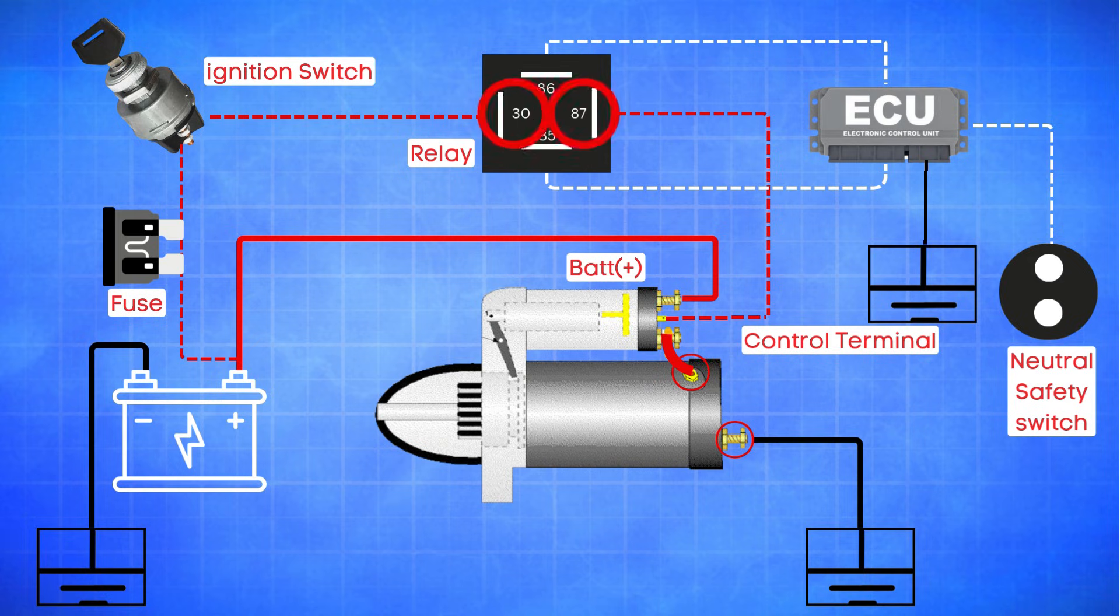30 and 87 pins. These are for the switch. Pin 30 is connected to the battery and pin 87 directs the current to the starter solenoid.